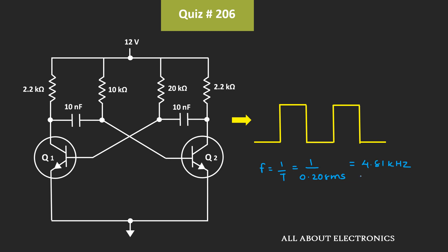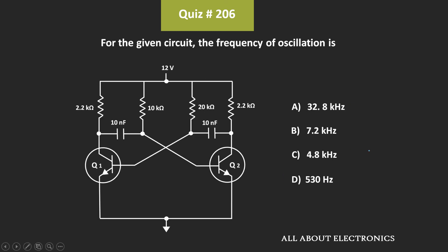So this will be the frequency of oscillation for the given circuit. That means we can say that for the given question, C is the correct answer.